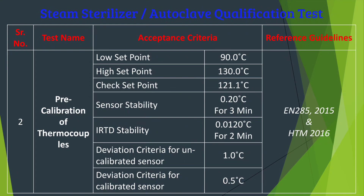The deviation criteria for an uncalibrated sensor is 1°C, and for a calibrated sensor is 0.5°C. There are no specific set points given in guidelines; these are taken from various sources. General guidance in EN 285:2015 and HTM 2016 states that thermocouples used for temperature mapping of steam sterilizers must be calibrated. These parameters are used in recent practice for pre-calibration and post-verification of thermocouples.